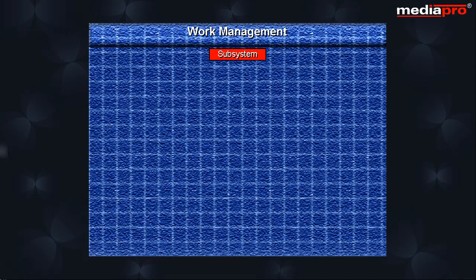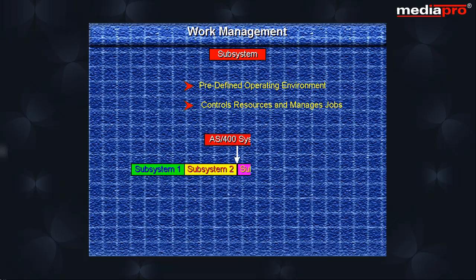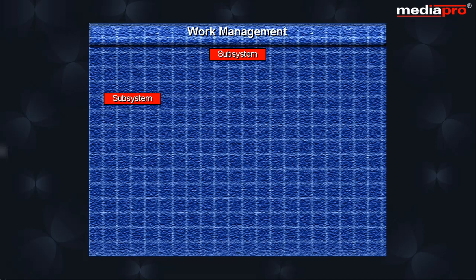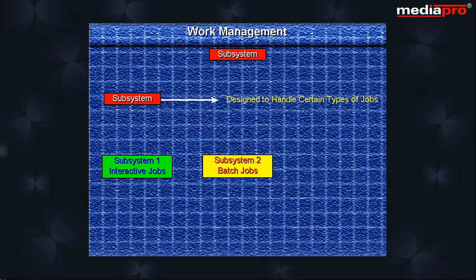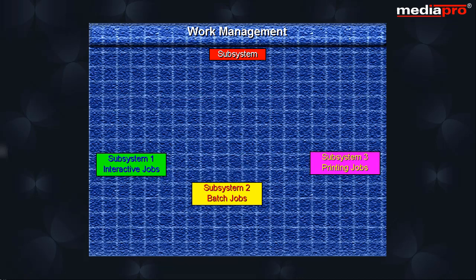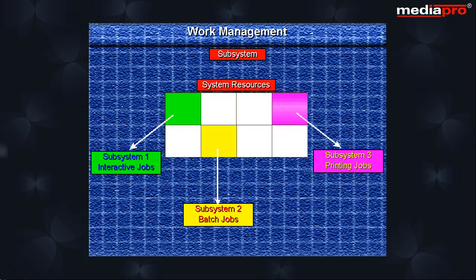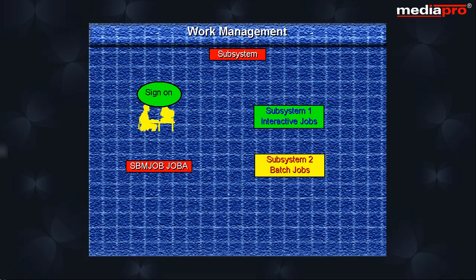A subsystem is a single predefined operating environment that controls certain resources and manages the jobs that enter the system. The AS-400 system can contain one or more subsystems, and each subsystem is designed to handle certain types of jobs. For example, you can set up one subsystem to handle only interactive jobs, while another subsystem handles only batch jobs, and a third handles only printing jobs. A certain amount of resources are allocated for each subsystem, and whenever a job is started, it is assigned to a particular subsystem.